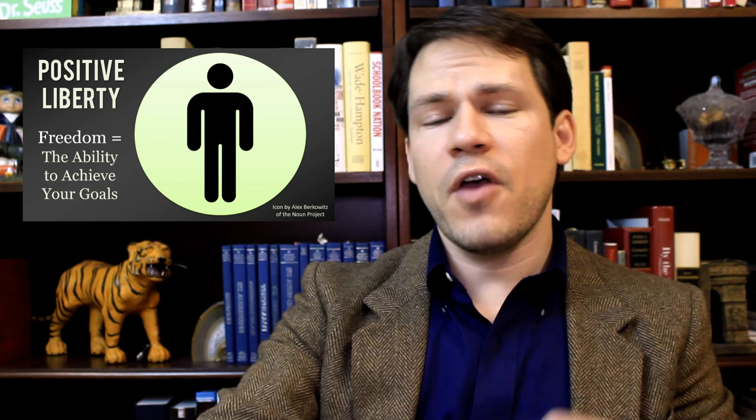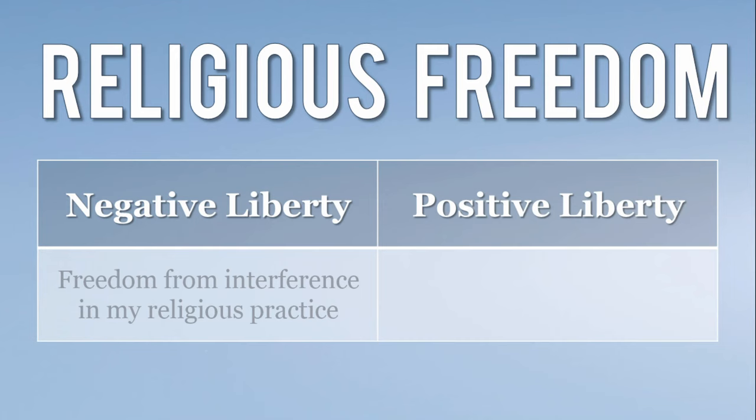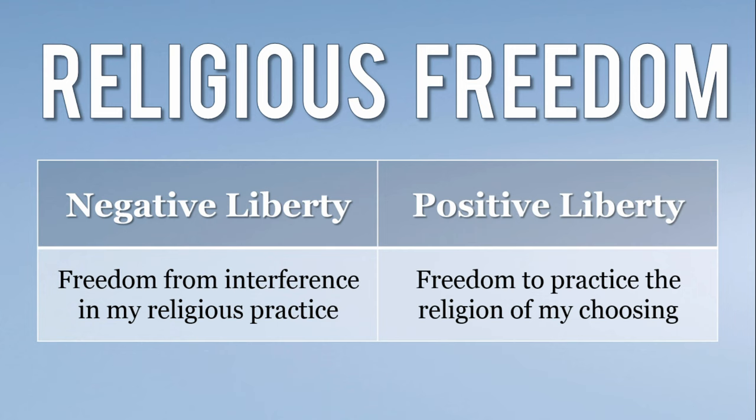There are some freedoms, such as religious freedom, that we could look at in terms of negative or positive liberty. In terms of negative liberty, we would look at freedom from interference in my religious practice, whereas positive liberty would define this as the freedom to practice the religion of my choosing. For example, in the Bible, when the Jews are given money by the Persian king Cyrus the Great to go back and rebuild their temple in Jerusalem, Cyrus made this freedom possible through interference — which challenges the definition of negative liberty.